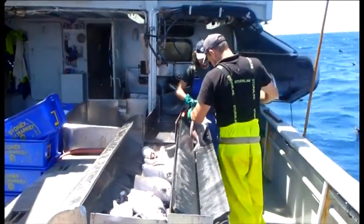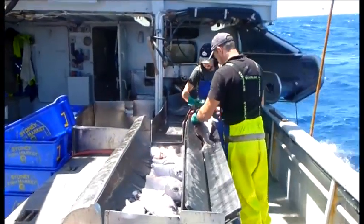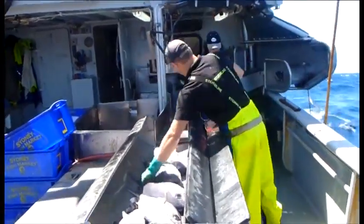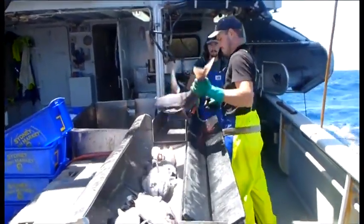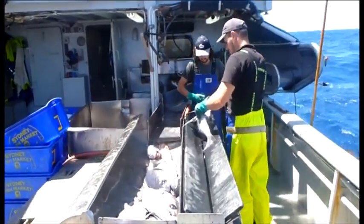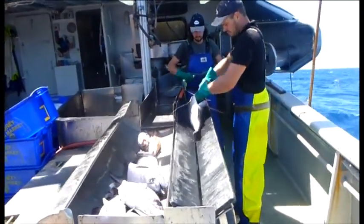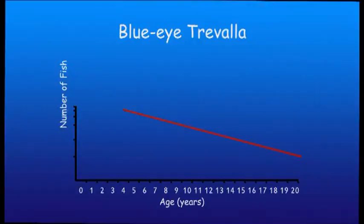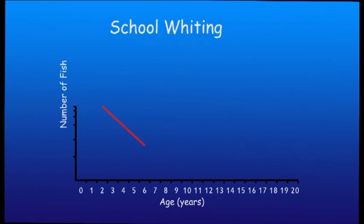Let's look at examples using species that our case study fishermen catch. Blue-eye Travella are one of the longest living of our species, reaching at least 40 years old, and its catch curve looks like this. School Whiting live for around 7 years and their catch curve is much steeper — the steeper the curve, the higher the mortality rate.